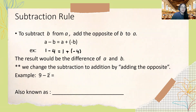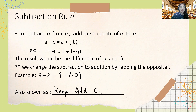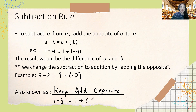Here's another example: 9 minus 2. Using the subtraction rule, we keep 9 the same, add instead of subtract, and write the opposite of positive 2, which is negative 2. This is also known as keep, add, opposite — KAO. So we keep the first number the same, add, and write the opposite of the second number.